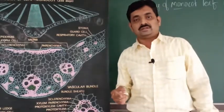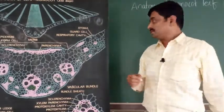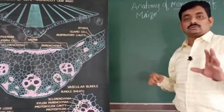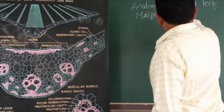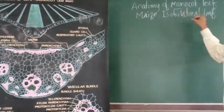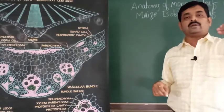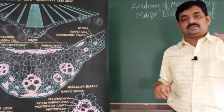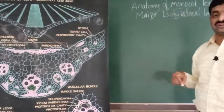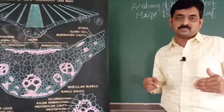Next we will consider the anatomy of monocot leaf. The example is maize. This leaf is also called isobilateral leaf because both surfaces — the upper and lower surface — are identical. Stomata are equally distributed on upper and lower epidermis.